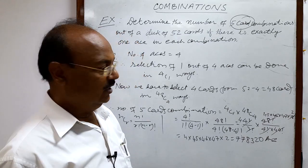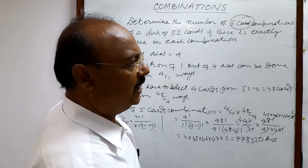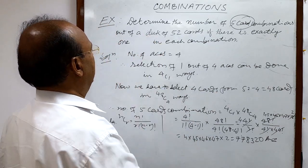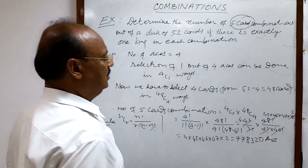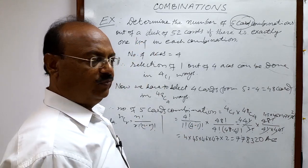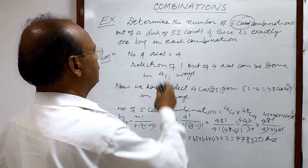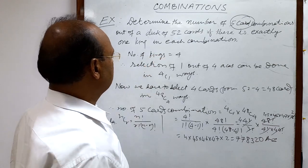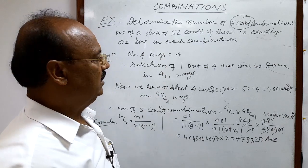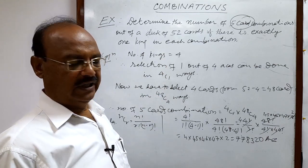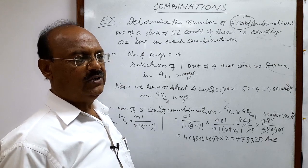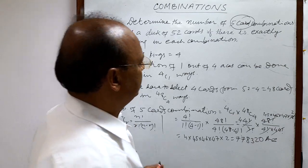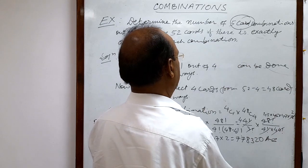One more interesting question — we can do another question in the same pattern. If instead of ace we have king, then no problem; the answer will remain the same and the process will remain the same. Just replace aces by kings. Since the number of kings is also 4 — one king in each group of 13 cards, meaning diamonds, clubs, spades, and hearts.